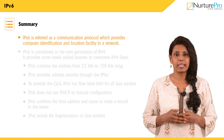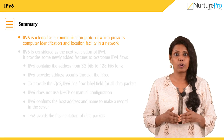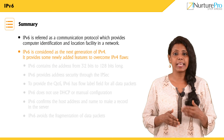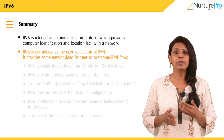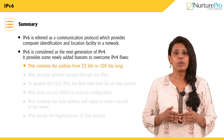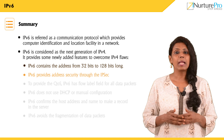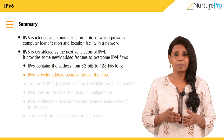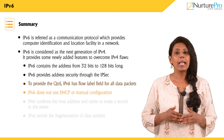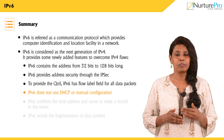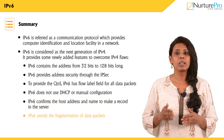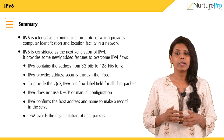Let us have a quick recap. IPv6 is a communication protocol providing computer identification and location in a network and is considered the next generation of IPv4. It features 128-bit addressing, IPsec-based address security, flow label fields for QoS, no DHCP or manual configuration, host address and name confirmation in the server, and avoidance of data packet fragmentation. Thank you for watching this video.